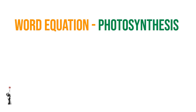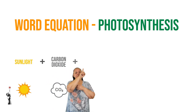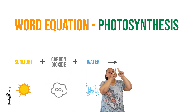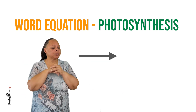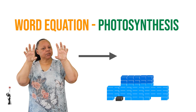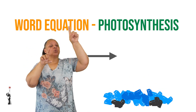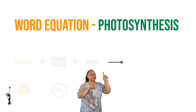Now let's discuss the word equation for photosynthesis. The word equation actually summarizes the process in a very simple format. It is written as: sunlight plus carbon dioxide plus water. You see the little arrow? The arrow indicates how the compounds of photosynthesis change into new compounds — that chemical reaction is indicated by the arrow between them.